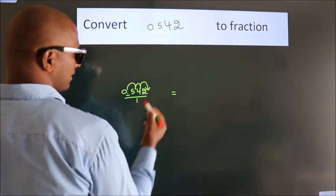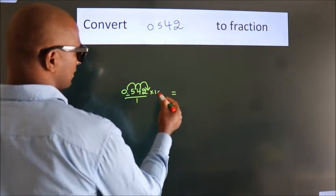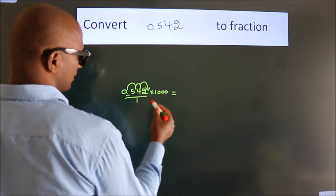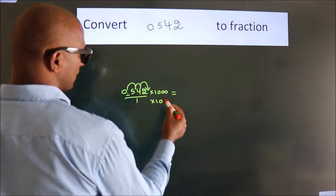for that we have to multiply it with 1000. Whatever number you are multiplying in the numerator, in the denominator also do the same.